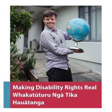Introduction. Article 31 requires the government to collect appropriate data and statistical information to give effect to the Disability Convention. Such data needs to be disaggregated to assist the government in determining how it is fulfilling the Disability Convention obligations and to identify and address barriers faced by disabled people in exercising their rights.